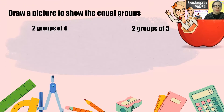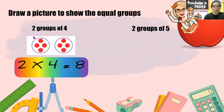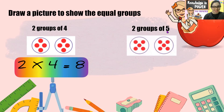Now we're going to draw a picture to show these equal groups. The first one is two groups of four — two big circles with four in each, for a total of eight in all, and here is the multiplication sentence. Now let's look at two groups of five: two big circles with five in each — one, two, three, four, five — one, two, three, four, five.